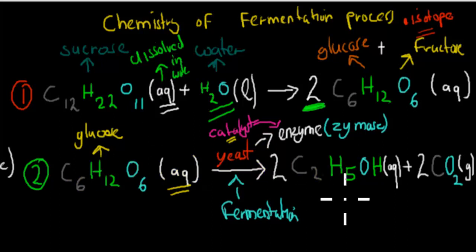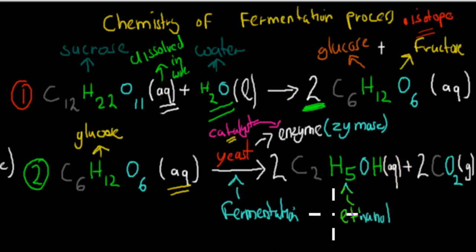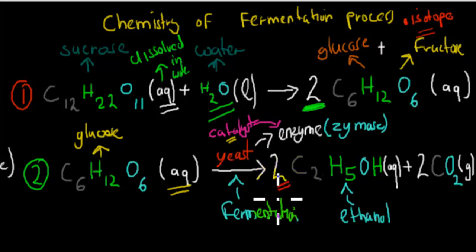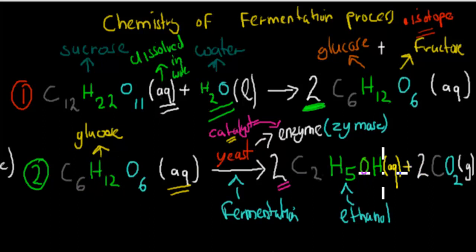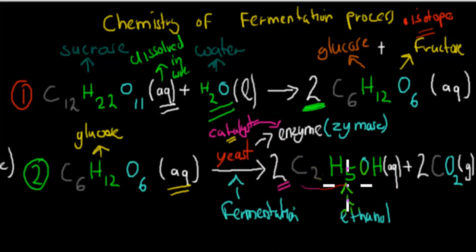So here we have glucose going to C2H5OH — that is ethanol — and the ethanol is also aqueous because it's dissolved in water. We get two ethanol molecules from one glucose molecule. That's about balancing the equation — we want the same number of atoms on the left-hand side as on the right-hand side. By putting a two in front, we get six carbons, twelve hydrogens, and six oxygens on both sides. The CO2 — carbon dioxide — is produced as a by-product.